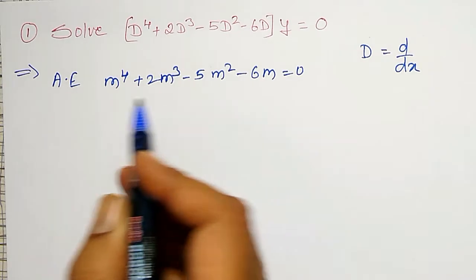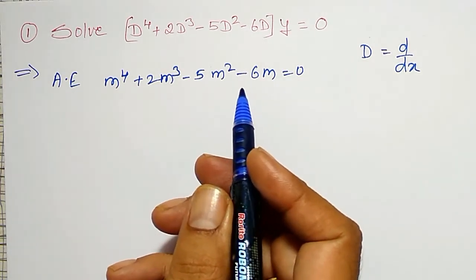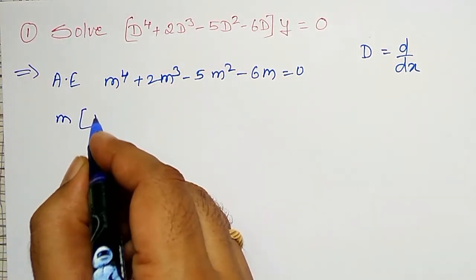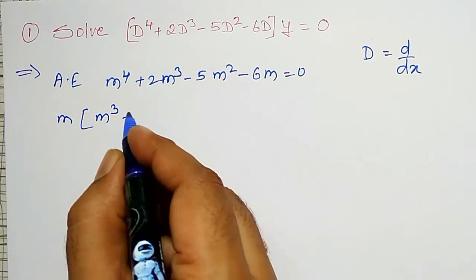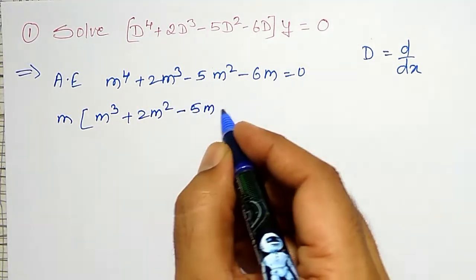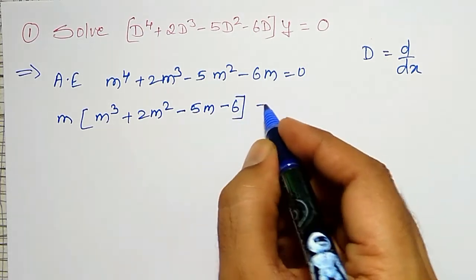And what you can observe here, all the terms are containing m terms. Therefore, we can take m common from all the terms. Therefore, m into bracket, m cube plus 2m square minus 5m minus 6 equal to 0.